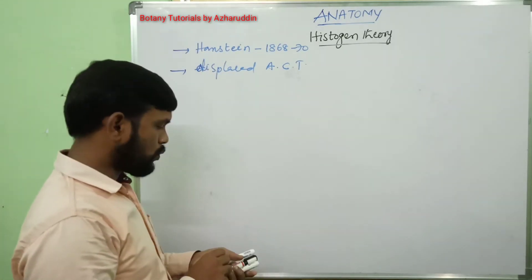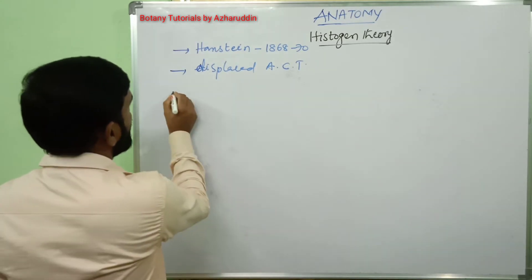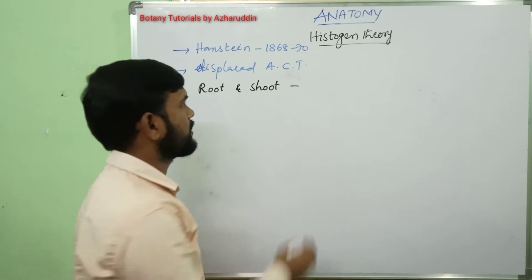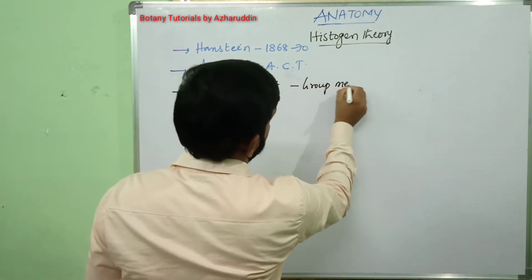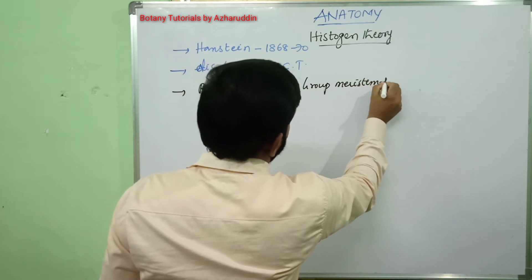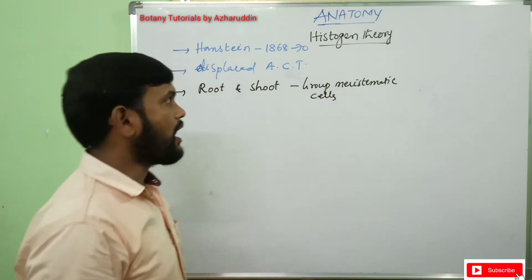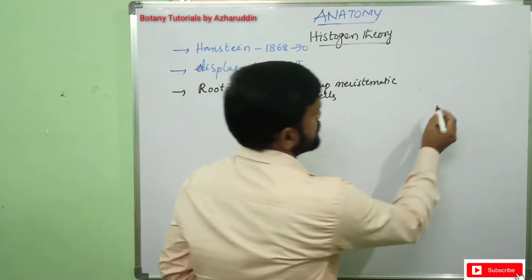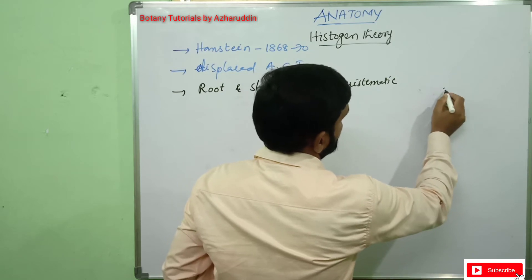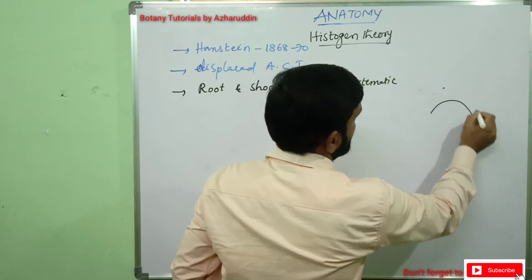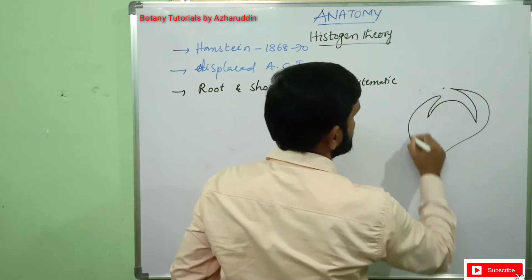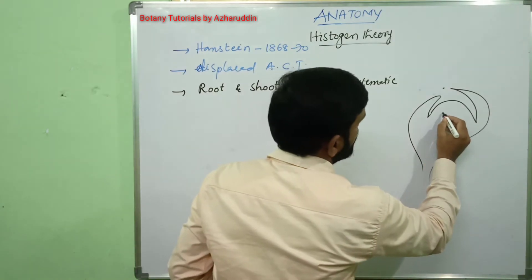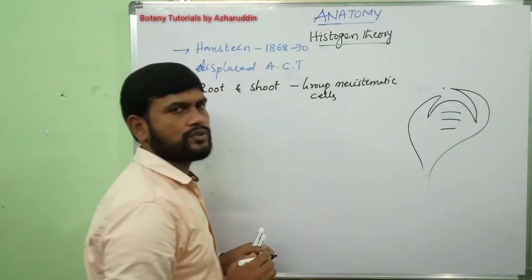According to Hanstein, in the root and shoot apex, a group of meristematic cells are present, and they are divided into three zones. This is the root apex — in the root apex, a group of meristematic cells are present and they are divided into three zones.